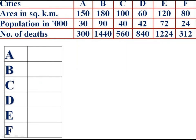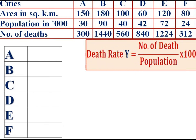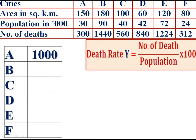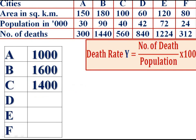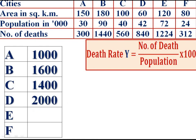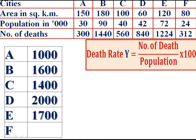Then compute the y variable — death rate — as number of deaths divided by population into hundred. City A: 300 divided by 30 into hundred = 1000. City B: 1440 divided by 90 into hundred = 1600. City C: 560 divided by 40 into hundred = 1400. City D: 840 divided by 42 into hundred = 2000. City E: 1224 divided by 72 into hundred = 1700. City F: 312 divided by 24 into hundred = 1300.